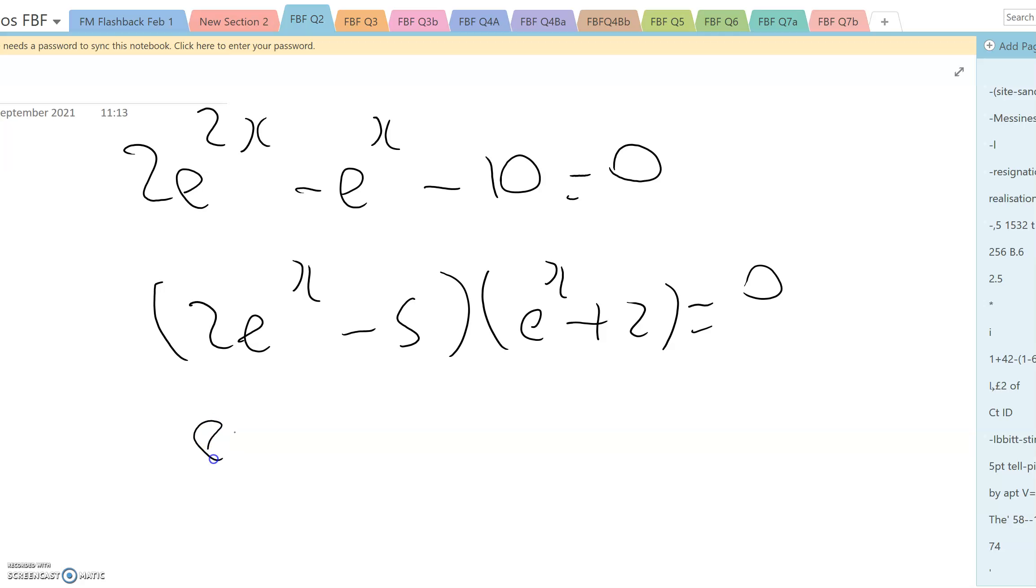Now that means either e to the x equals minus 2, which is not possible, or e to the x is 5 over 2, and therefore the only stationary point is at ln of 5 over 2.